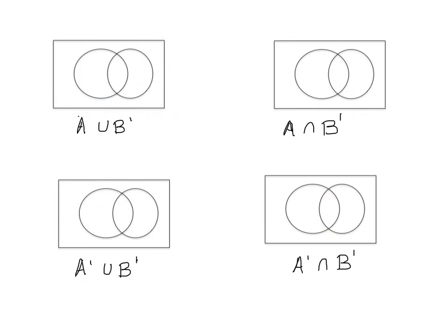Now we step up in difficulty. These problems are a little harder. We have two union problems first, since unions are slightly easier than intersections. Remember, when you see union, you shade everything in both sets. For A union B complement, first shade everything in A, then shade everything in B complement — everything outside B.